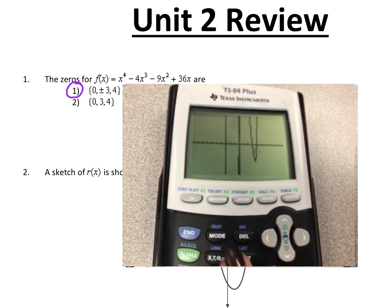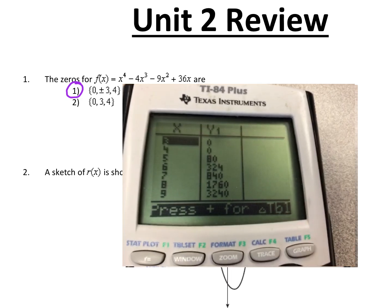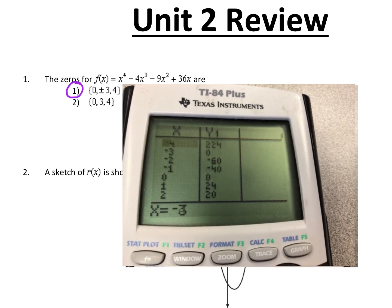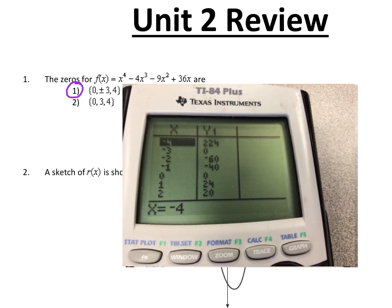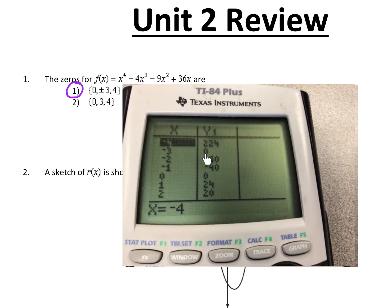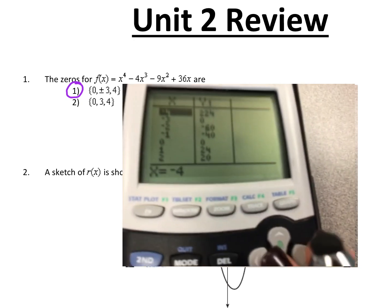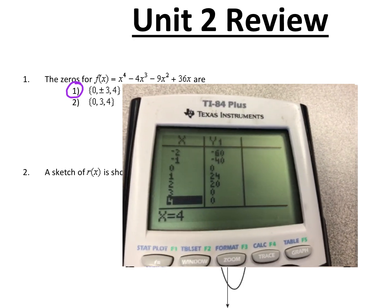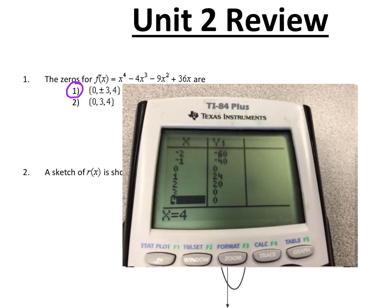If that's hard to see graphically, you could always hit second graph and go to the table of values. You want to see where the y-value is equal to zero, because that's where the graph intersects the x-axis. So look at negative 3 — we have 0. At 0, the y-value is 0. And at 3 and at 4 as well. So 0, positive and negative 3, and 4.